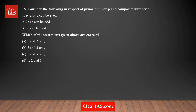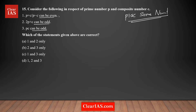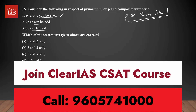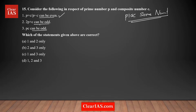We have three statements to evaluate. You can see it's written as things like '2p + c can be odd' — these are 'can be' type questions. For such questions, your strategy is to pick some numbers for P and C and prove that the result is possible.